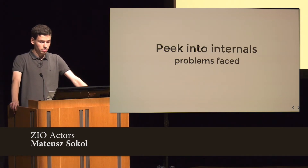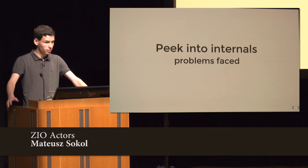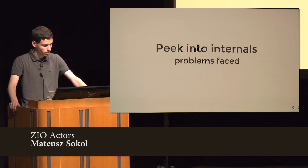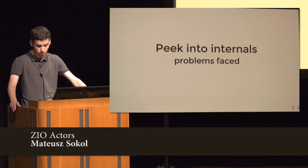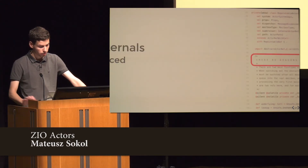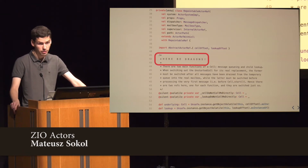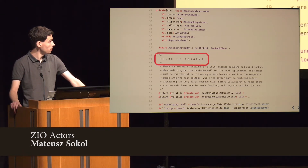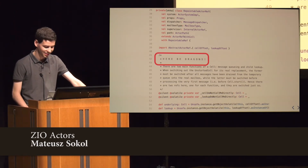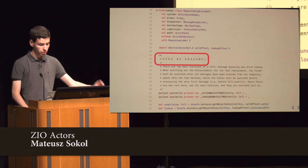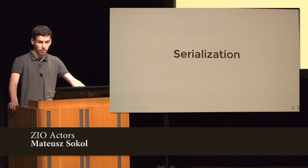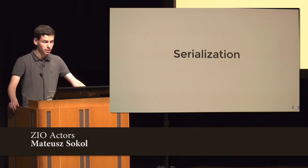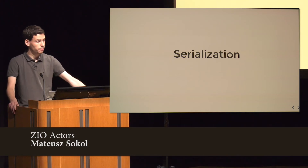Now let's take a look at the internals — the problems you have to face while implementing your own actor system. While doing this I was looking a lot at the Akka internals, and the fun part was that the source code of Akka even warned me that I might encounter dragons in the source code. So that was pretty intense. The two issues I'd like to cover are: first, serialization — how to deal with serialization for actors — and second, socket handling. Both are about remoting.